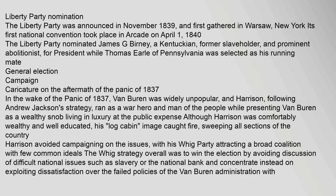General election campaign: In the aftermath of the Panic of 1837, Van Buren was widely unpopular. Harrison, following Andrew Jackson's strategy, ran as a war hero and man of the people while presenting Van Buren as a wealthy snob living in luxury at the public expense. Although Harrison was comfortably wealthy and well-educated, his 'log cabin' image caught fire, sweeping all sections of the country. Harrison avoided campaigning on the issues, with his Whig party attracting a broad coalition with few common ideals. The Whig strategy was to win the election by avoiding discussion of difficult national issues such as slavery or the National Bank, and concentrate instead on exploiting dissatisfaction over the failed policies of the Van Buren administration.